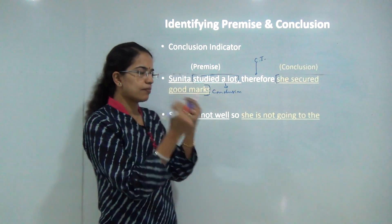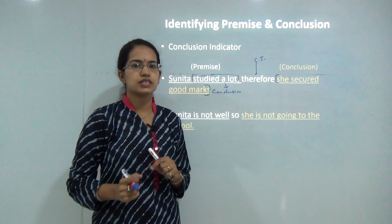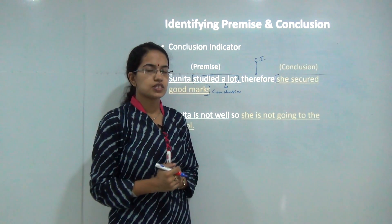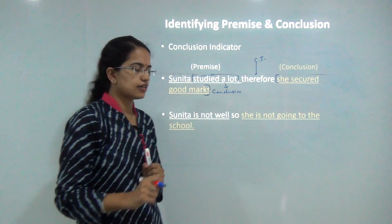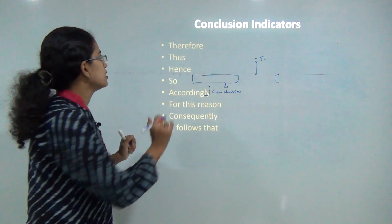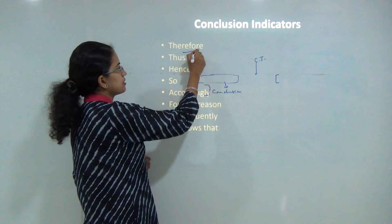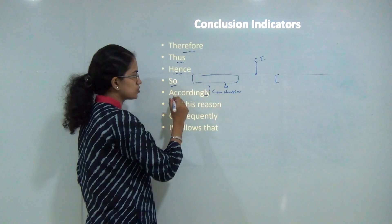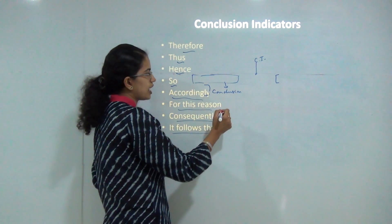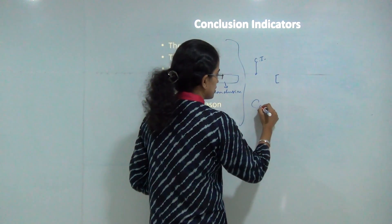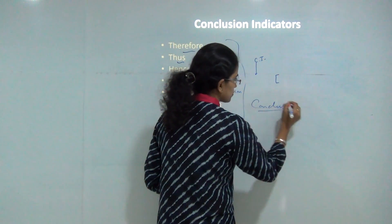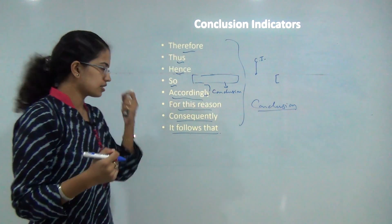So if you have any passage or any set of information given, you can quickly and easily identify what would be the premise and what would be the conclusion. Words like 'therefore,' 'thus,' 'hence,' 'henceforth,' 'so,' 'accordingly,' 'for this reason,' 'consequently,' and 'it follows that' are all indicators of conclusion. With the help of these words you can easily reach a conclusion.